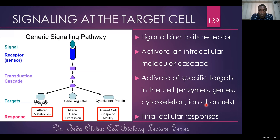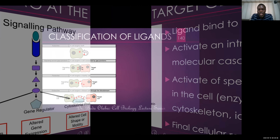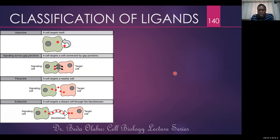So this is what happens at the target cell: the ligand binds to the receptor, activates an intracellular molecular cascade, which eventually activates some targets within the cell — enzymes, genes, cytoskeleton, or ion channels — and depending on what has been activated, you have final cellular responses. The cell will respond in a particular way. Having said that, let me now give you the classification of ligands. We have said that ligands are chemical messengers, and we classify them in different categories.